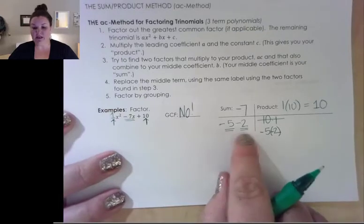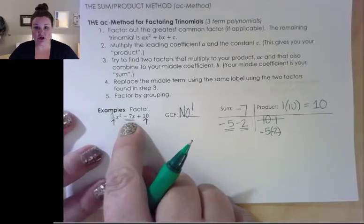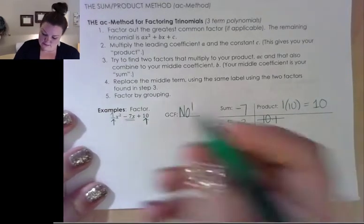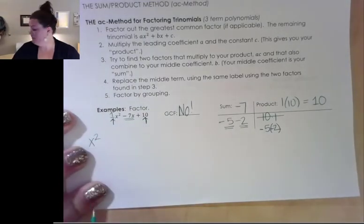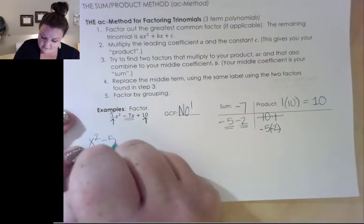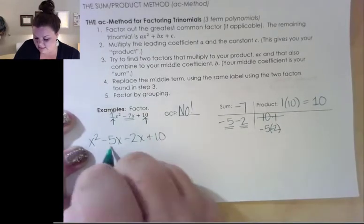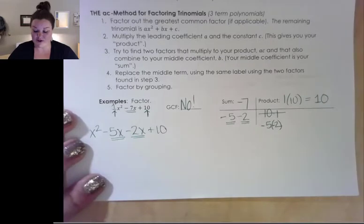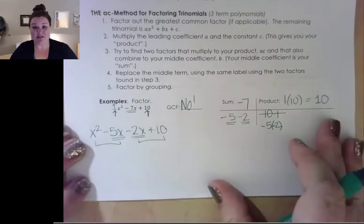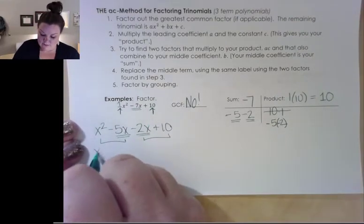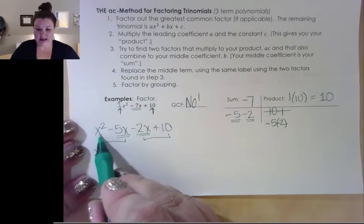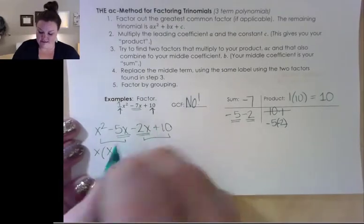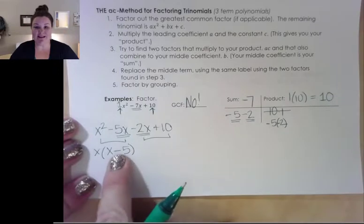Now that I have the pairing I need, I want to replace the middle term with these two numbers. The middle term is labeled x, so when I put these two numbers in I need to label them with x. I still have my x² out front, but instead of writing negative seven x I'm going to put in negative five x minus 2x plus 10. All I did was take the two numbers from my chart and replace my middle term with them.